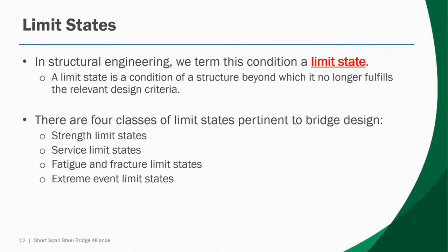The Strength 1 load combination refers to a condition critical to a bridge's safety. In structural engineering, we term this condition a limit state — a condition of a structure beyond which it no longer fulfills the relevant design criteria. There are four classes of limit states pertinent to short span steel bridge design: strength limit states, service limit states, fatigue and fracture limit states, and those limit states related to extreme events.